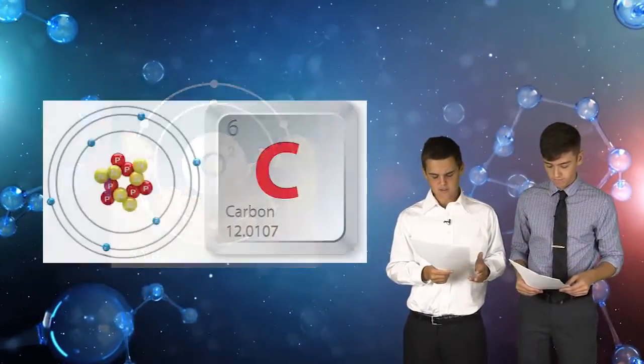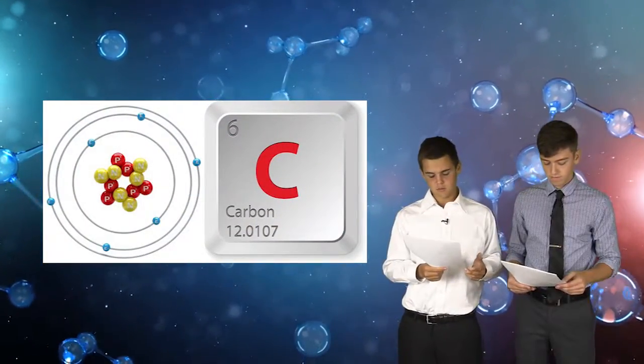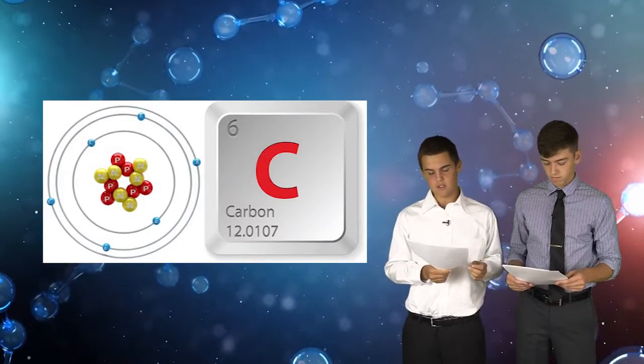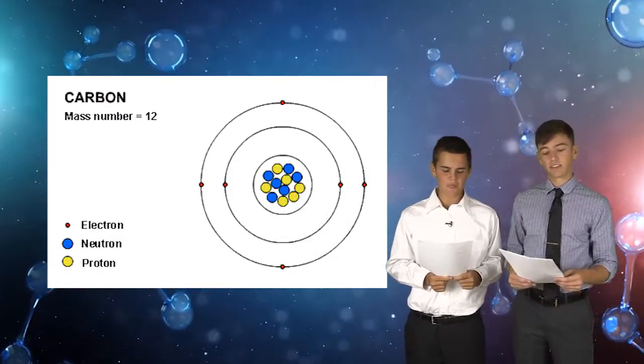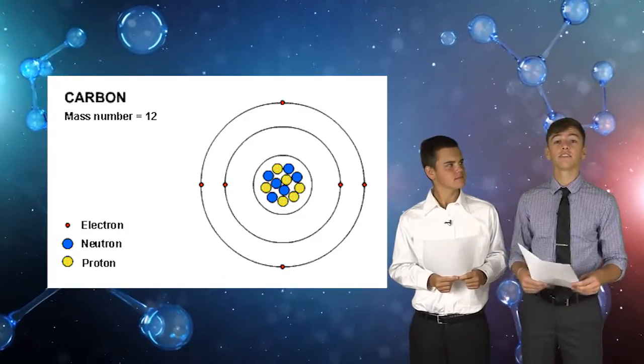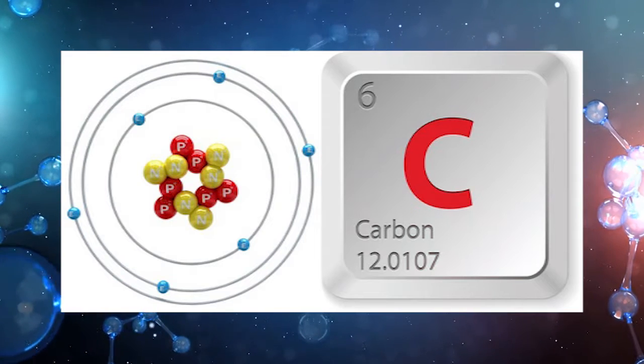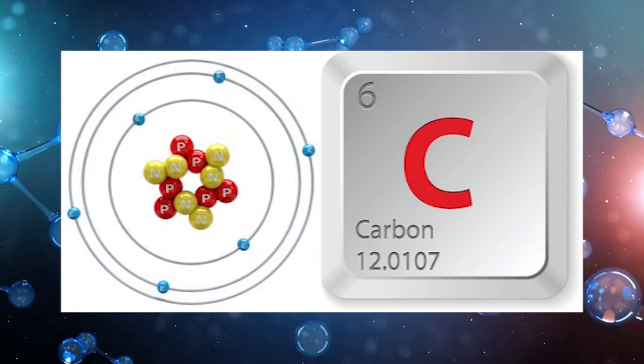Each element is designated by a chemical symbol. Chemical symbols are one or two letters in English. Carbon's chemical symbol is C. The atom's mass number is calculated by adding the number of neutrons and protons. An atomic mass unit, or AMU for short, is the standard unit for measuring the mass of atoms and their subatomic particles.